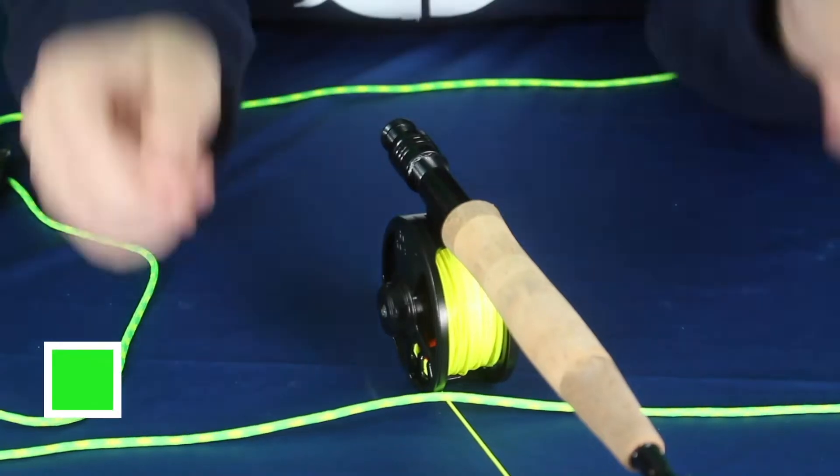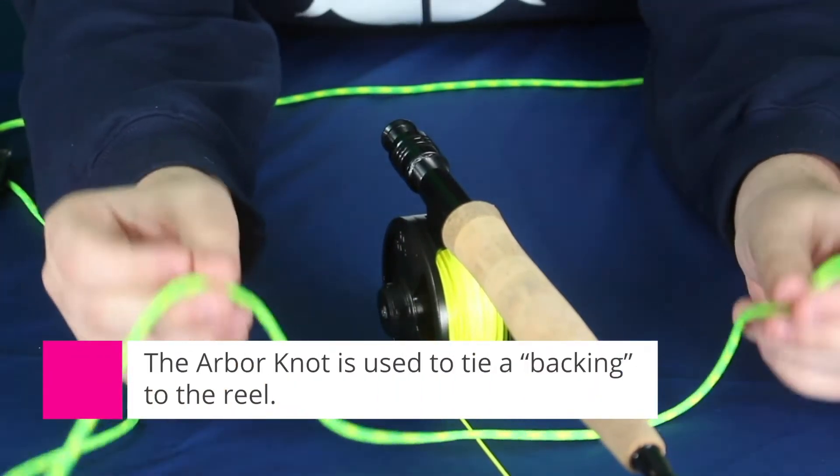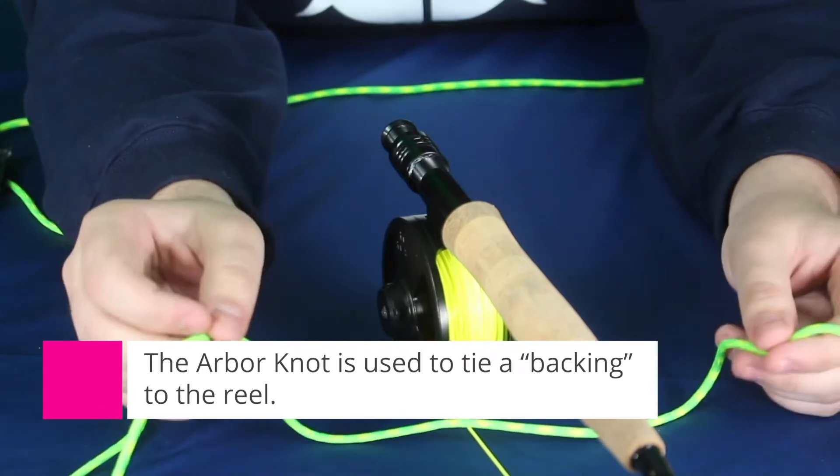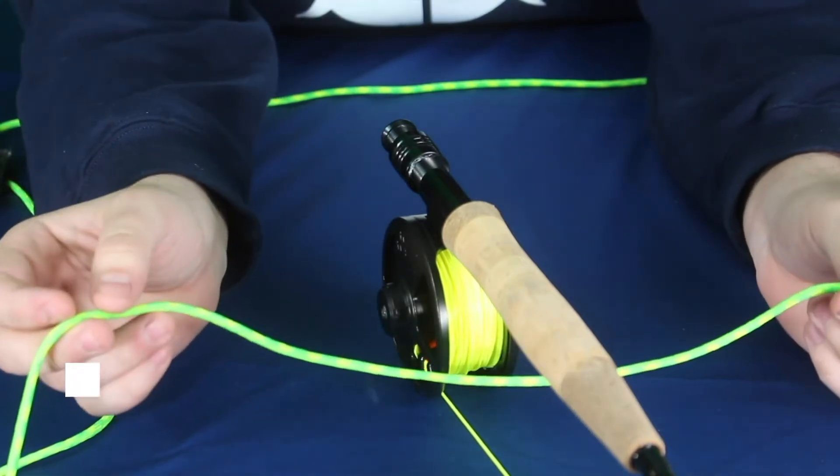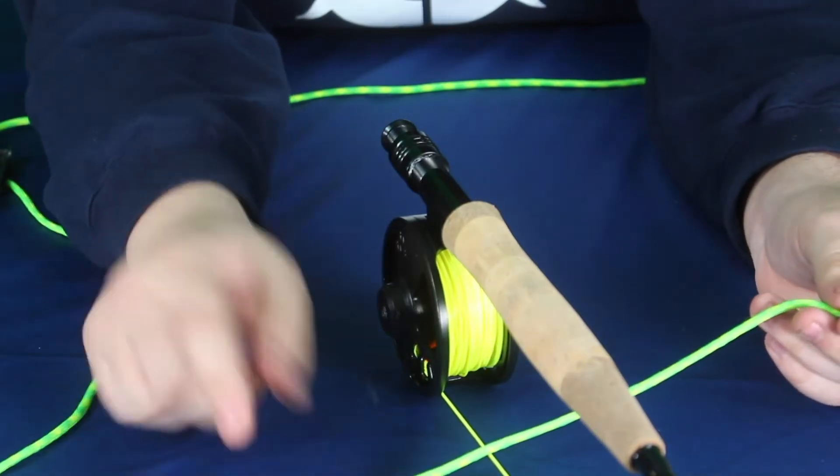Alright everybody, today we're going to be talking about the Arbor Knot. Now the Arbor Knot is primarily used to connect your line to your reel, but our reel already has line on it so I'm just going to show you on this here cork of our handle.